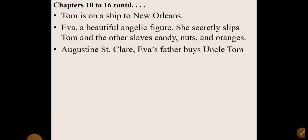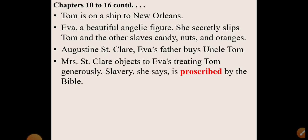Tom is sold and taken to New Orleans. Mr. Augustine St. Clare buys him because Eva persuaded her father to do so, and St. Clare agreed because Tom had saved Eva's life. We also saw Mrs. St. Clare's attitude — she feels it is the right of white people to enslave black people and to train them, as she believes it is mentioned in the Bible.